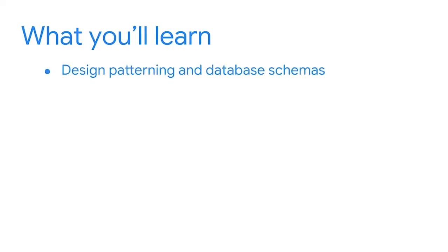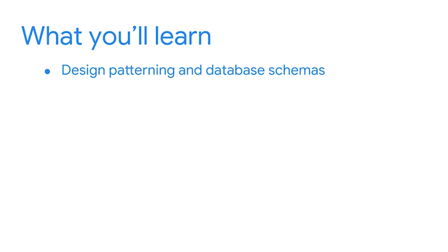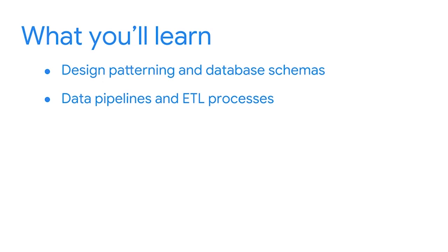First, you'll learn about design patterns and database schemas, including common structures that BI professionals use. You'll also be introduced to data pipelines and ETL processes. ETL stands for Extract, Transform, and Load. This refers to the process of gathering data from source systems, converting it into a useful format, and bringing it into a data warehouse or other unified destination system. This will be an important part of your job as a BI professional.